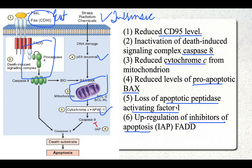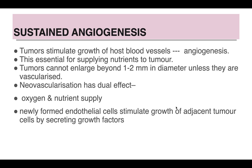Basically, if there are reduced pro-apoptotic factors or increased inhibitors of apoptosis, the cell will not undergo apoptosis and can survive. The next important topic in the molecular basis of carcinoma is sustained angiogenesis.